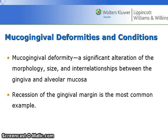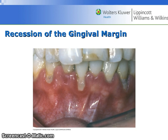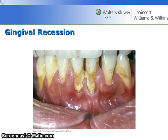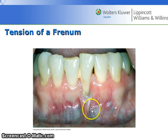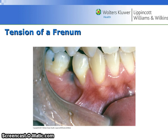Mucogingival deformities and conditions. A mucogingival deformity is a significant alteration of the morphology or shape, size, and interrelationships between the gingiva and alveolar mucosa. Recession of the gingival margin is the most common example. Here are images showing recession of the gingival margin. The tension of the frenum is pulling on the gingival margin causing recession. Here is another frenum pulling on the gingival margin — you need to be sure to check for these when you are doing your intraoral examinations.